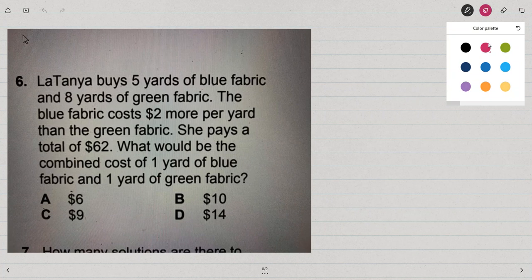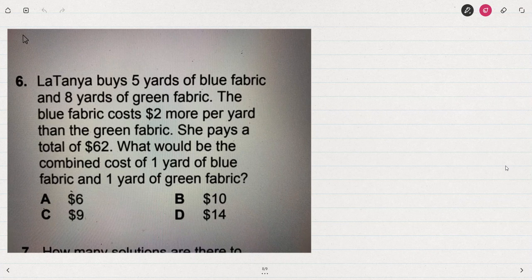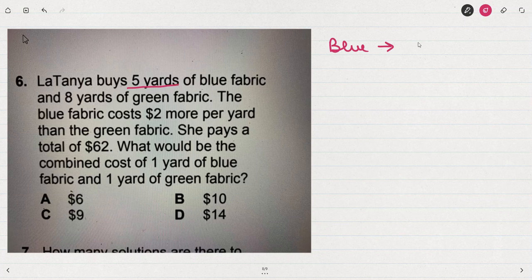I'm going to start this problem by making sure I understand it. To do that, I'm going to take a few notes. From the problem, LaTanya buys five yards of blue fabric and eight yards of green fabric.